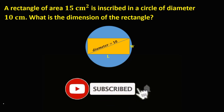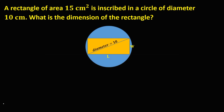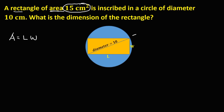Let's have this problem: a rectangle of area 15 centimeters squared is inscribed in a circle with diameter 10 centimeters. What is the dimension of the rectangle? Given the figure, the formula for the area of a rectangle is length times width. Since area is 15 centimeters squared, we have equation one: 15 equals length times width.